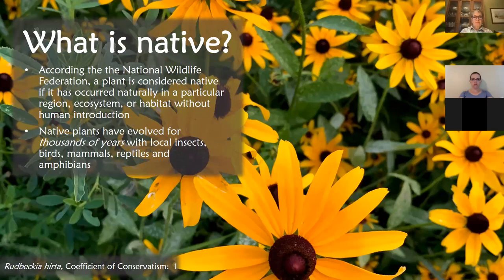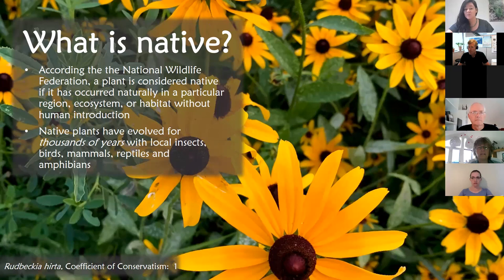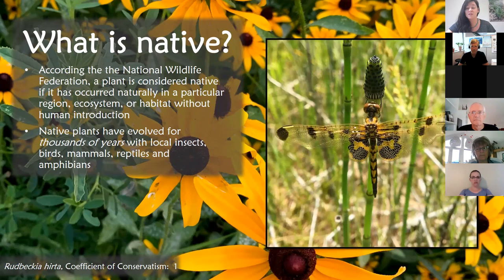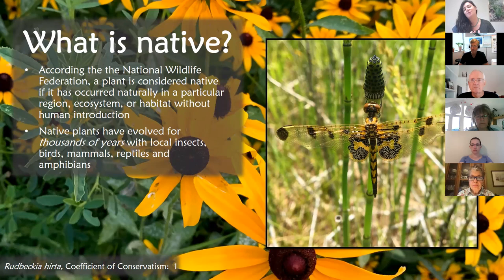A native plant is one that has occurred in our particular region or ecosystem for a really long time without any human introduction. We're also going to talk about invasive species, which are non-native plants that have been introduced through humans, and some of those can really cause a lot of issues. These plants have evolved for thousands to millions of years with our local insect population and our wildlife. I like to show this picture because these two species — a dragonfly and the plant called scouring rush, or horsetail snake grass — have been with each other for over 300 million years.